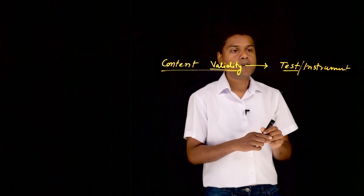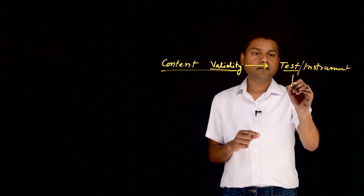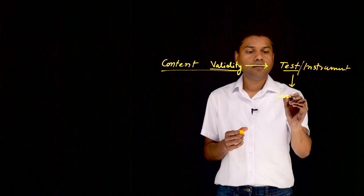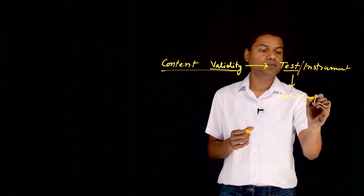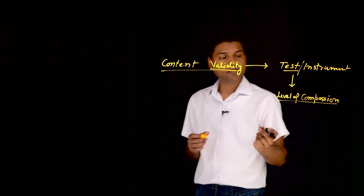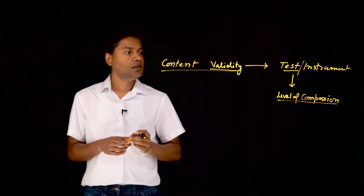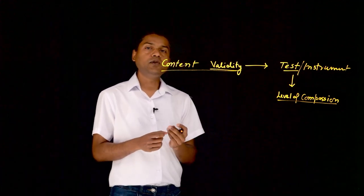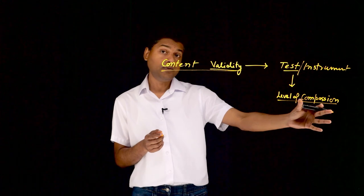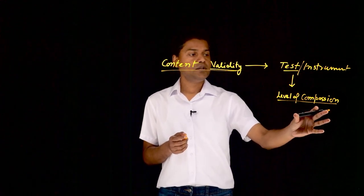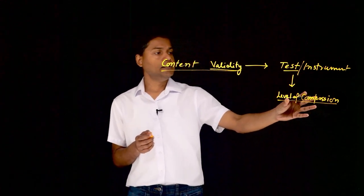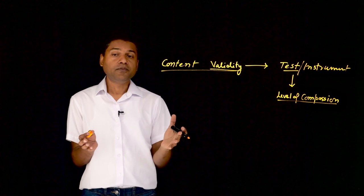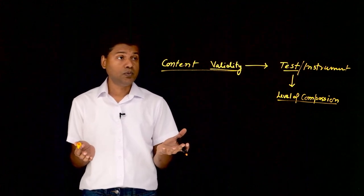Let's understand this with an example. Let's say there is a test which claims that it measures level of compassion — a psychological instrument that measures individuals' level of compassion. Content validity for this test would refer to the extent to which the items in this scale are representative of the overall components, the different components of this construct, which is compassion.